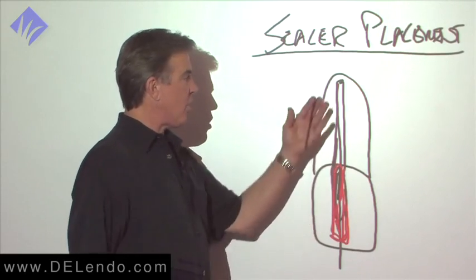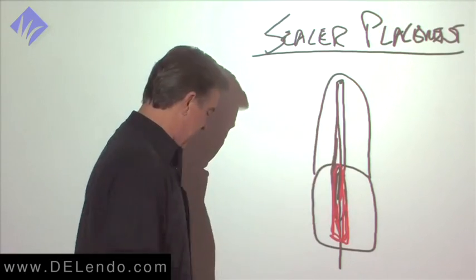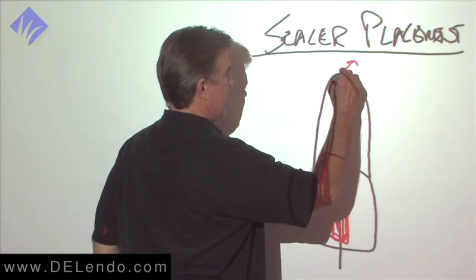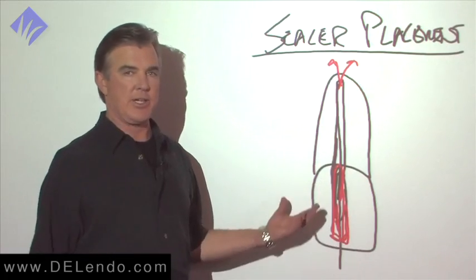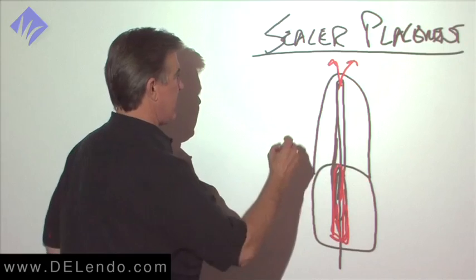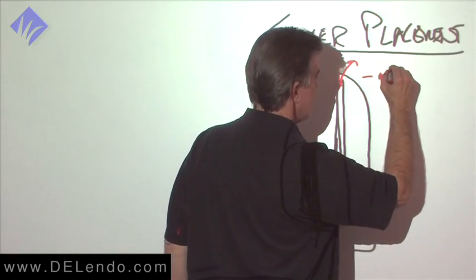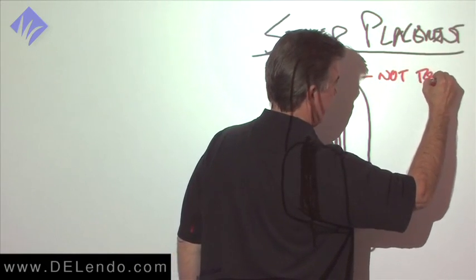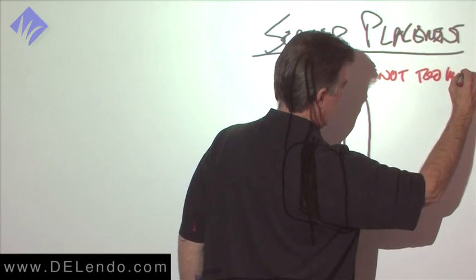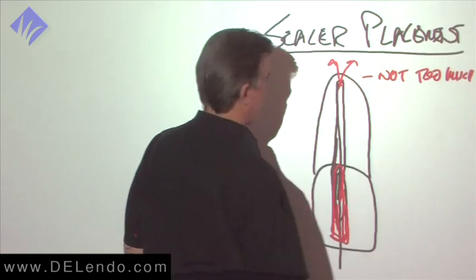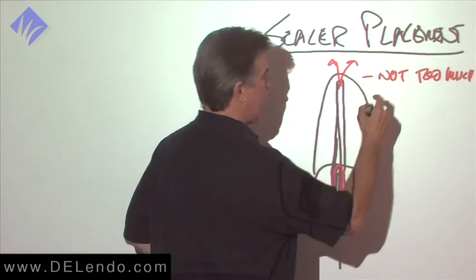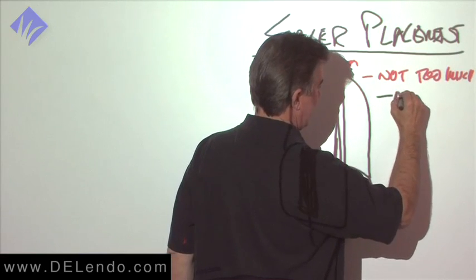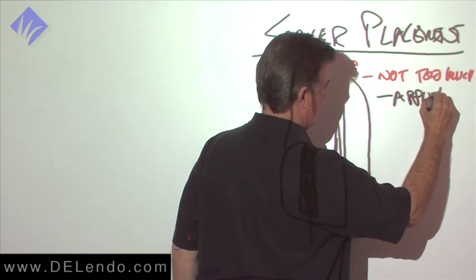And if you have a whole load of extra sealer in here, it's going to shoot it out the end. It's going to look like a shotgun blast. So we can't have not too much sealer. How do we prevent that? By blotting.